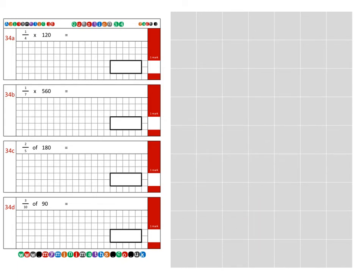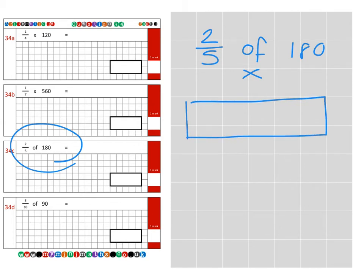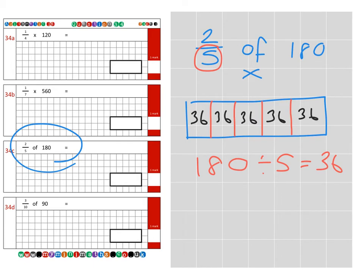And next is question 34c, which is two fifths of 180. Don't forget this is the same as multiply. So if we take our box again which represents the full 180, and we divide that into five equal parts, 180 divided by 5 gives us 36, so there's 36 in each of these parts, which is one fifth each. Then if we take two of them, that's 36 add 36 to give us a final total of 72.